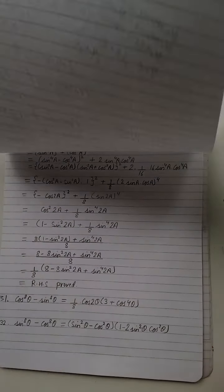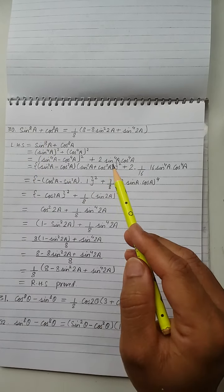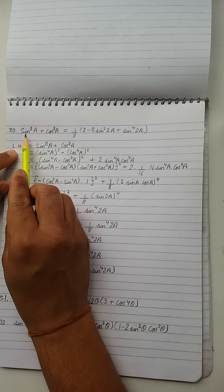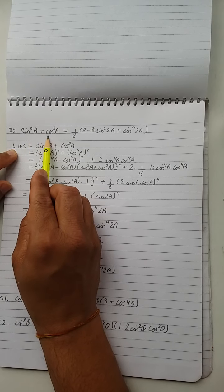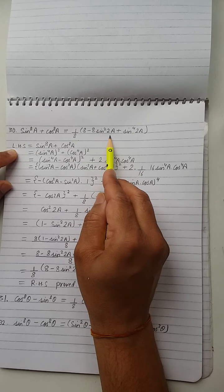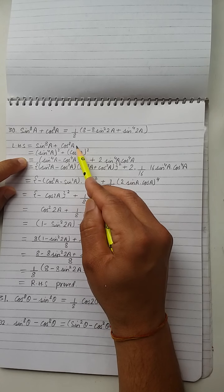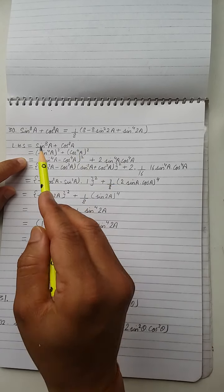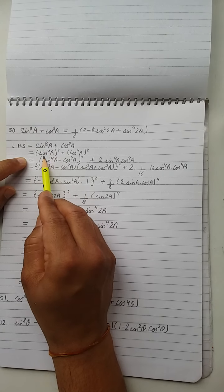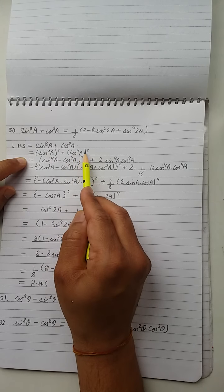Now next question, question number 30, which is a bit lengthy but you must understand it as well. In question number 30 we have sin⁸a + cos⁸a equal to 1/8 in bracket 8 minus 8sin²2a + sin⁴2a.